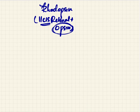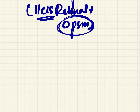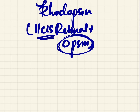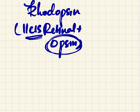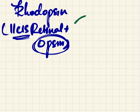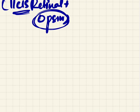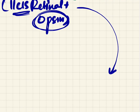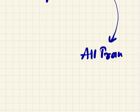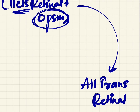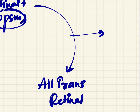In the retina we have rhodopsin, a conjugated protein of lewincis retinol and opsin. Whenever light falls on the rhodopsin, conformational changes occur in the opsin. These conformational changes convert the lewincis retinol into all-trans retinal. This conversion of lewincis retinol into all-trans retinal generates a nerve impulse.